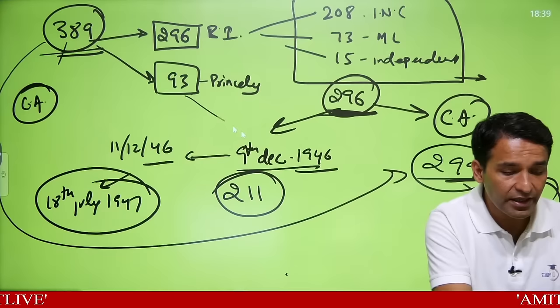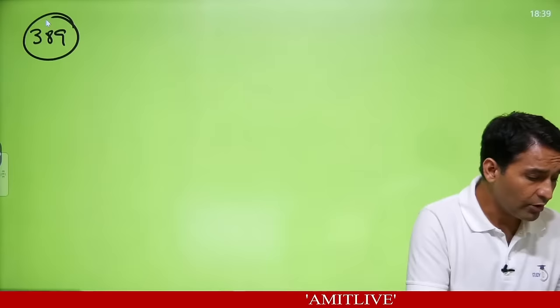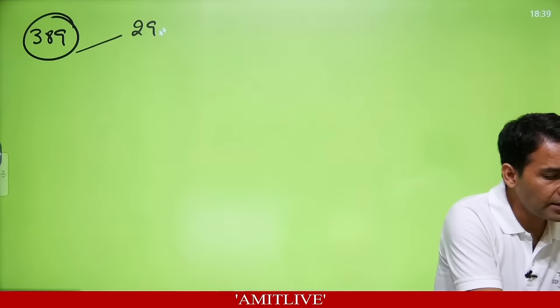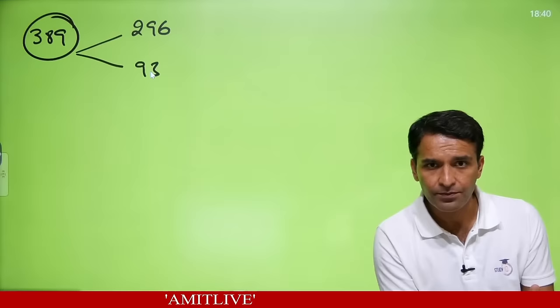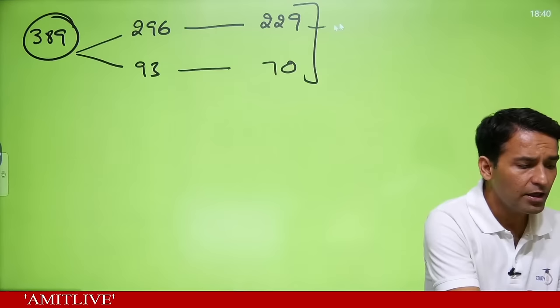So to repeat: 389 people were to be chosen — 296 from British India and 93 from princely states. After partition, 296 became 229 and 93 became 70, giving a total of 299 for the Indian Constituent Assembly. Of the original 296, Congress had 208, Muslim League had 73, and 15 were independent. Muslim League members from Pakistan areas joined there; any Muslim League individual in India's area became a member of the Indian Constituent Assembly.